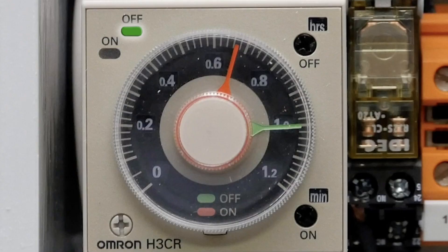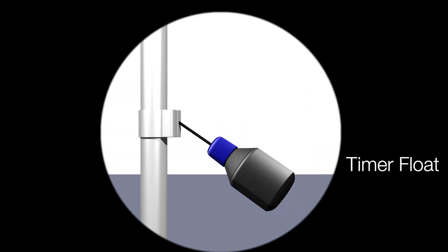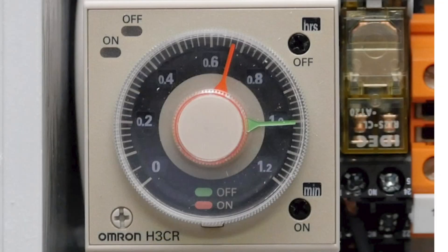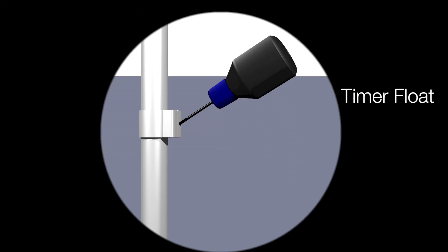After the pump off cycle has elapsed, the timer will engage the pump and go through the pump on cycle. When this cycle is complete and if the timer float is in the down position, the pump will shut off. If the timer float remains in the up position, the pump off cycle will begin again.